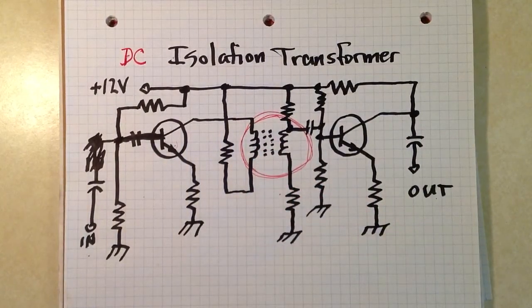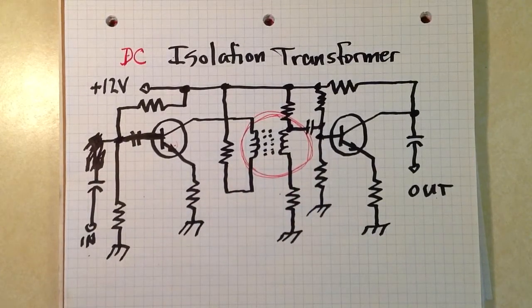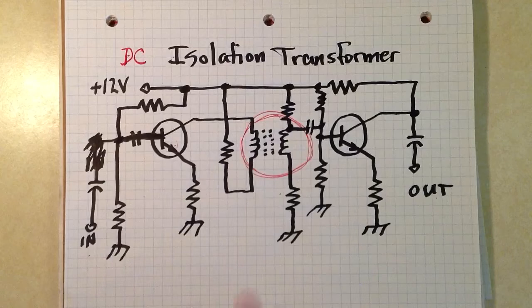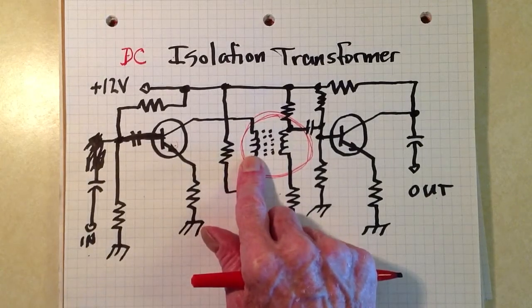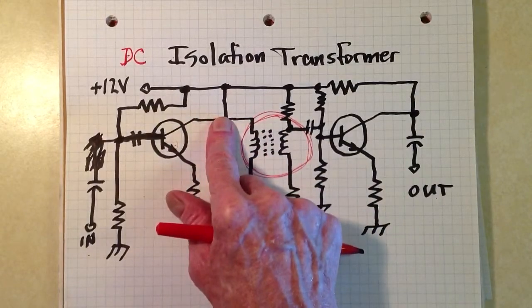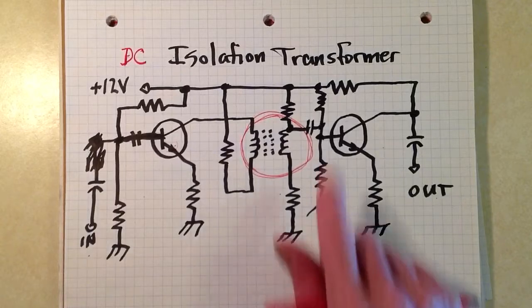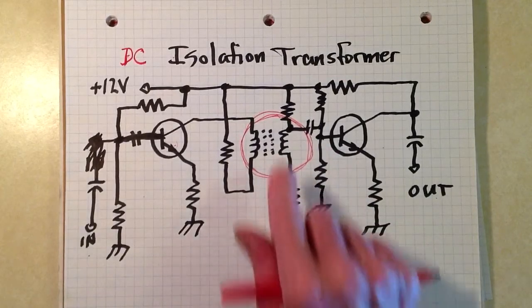A lot of times you'll find an isolation transformer with a one-to-one turns ratio. In this case, more than likely, it would have maybe a four or five or even ten to one turns ratio because the output impedance of this first transistor is likely to be quite a lot higher than the input impedance of the second one.